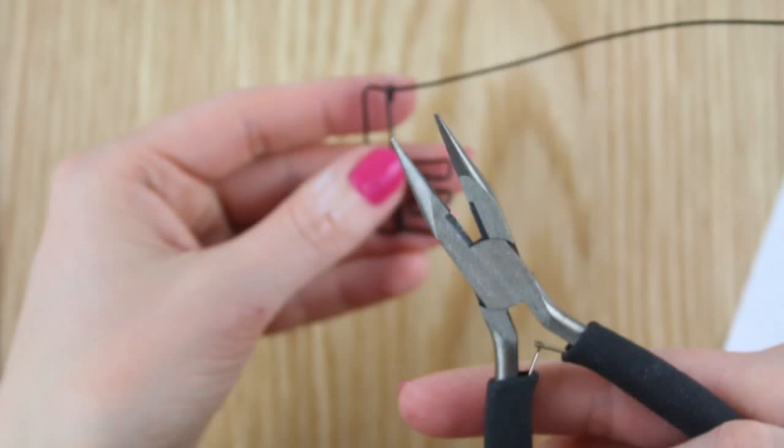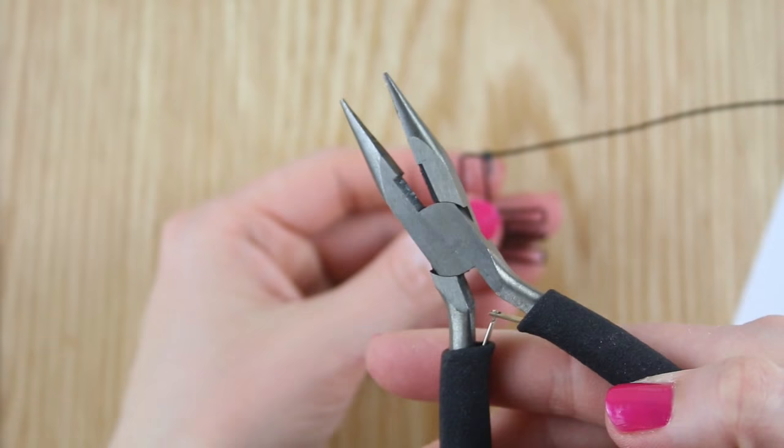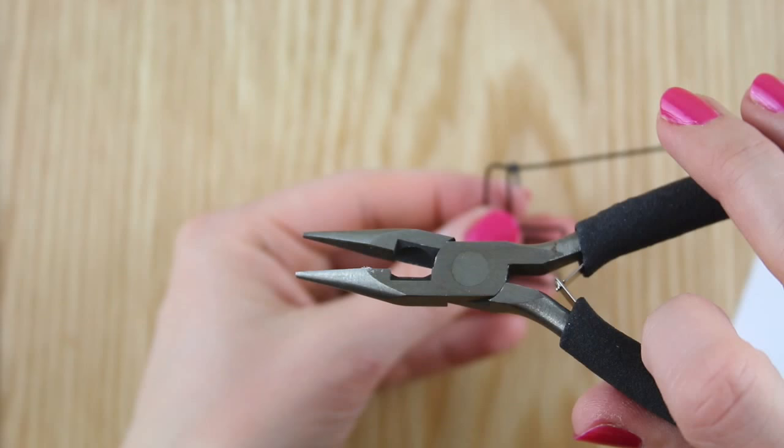Your pliers have tips for twisting and controlling the wire and the central section will cut the wire. Always be careful using pliers, don't get your fingers caught and make sure you cut the wire away from you in case any little bits ping out.